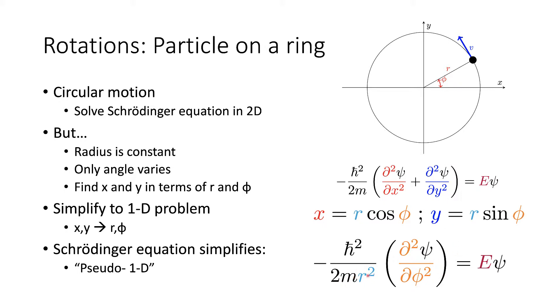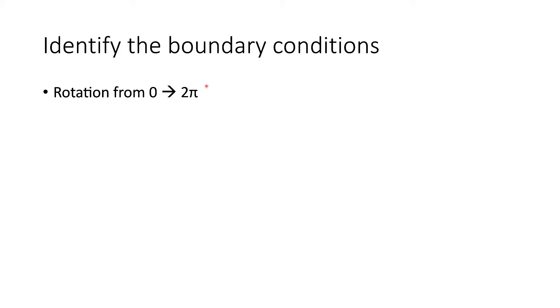This makes the Schrödinger equation considerably simpler. Looking at the mr-squared component — we'll come back to this later — it's important to recognize that we have mr-squared instead of just the mass. We now need to consider the boundary conditions, exactly as we did with the particle in the box. This time, however, we are rotating rather than moving along a box, so we're rotating from 0 to 2π — a full rotation around the ring.